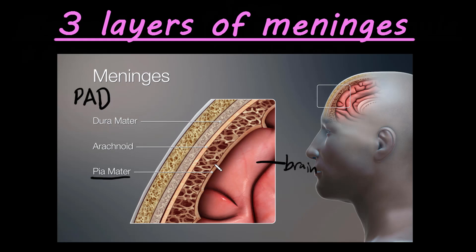First is the pia mater right here, which attaches along the brain and kind of follows its curves. Next, the A in PAD is the arachnoid layer. Right underneath we have the subarachnoid space — so under the arachnoid layer — and you might hear of a subarachnoid hemorrhage; that's where that occurs.